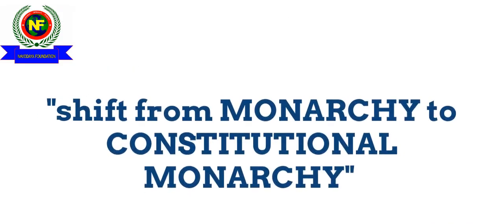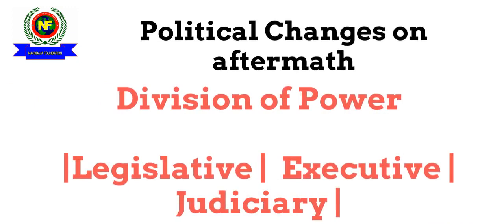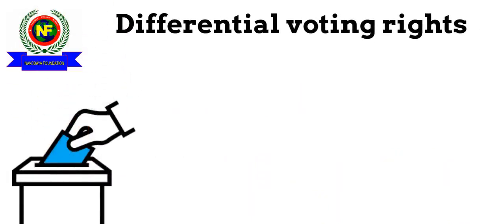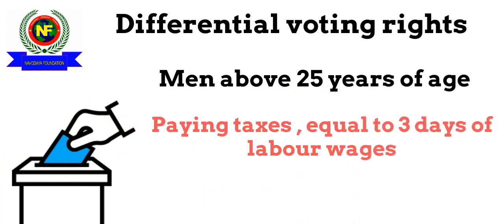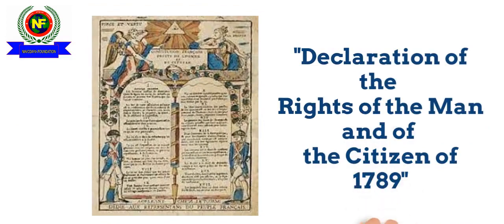Thus, France shifted from monarchy to constitutional monarchy, followed by political changes in which power was divided between the legislative, executive, and judiciary. The legislature consisted of the National Assembly, the executive consisted of the king and his ministers, and the judiciary consisted of judges. A system of limited voting was introduced, wherein men above 25 years of age or who paid taxes worth three days of labor wages were termed active citizens and could vote, introducing the distinction between active and passive citizens. Another important event was the Declaration of the Rights of Man and Citizens, which came into being via the National Assembly and upheld the human rights of citizens.